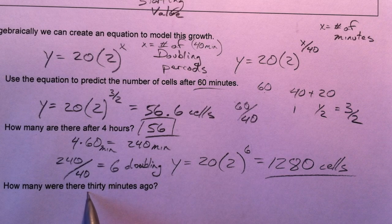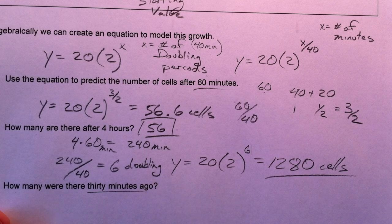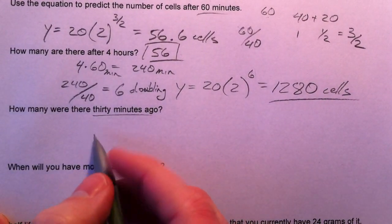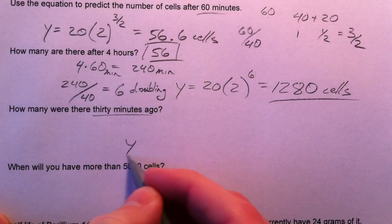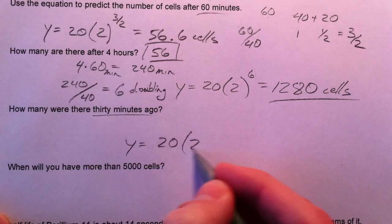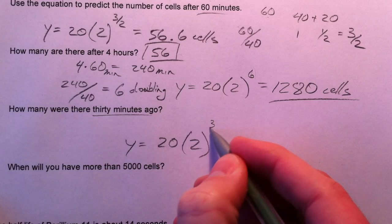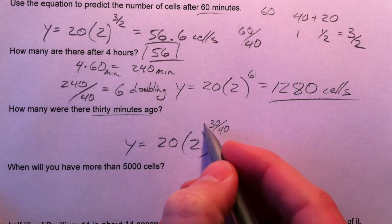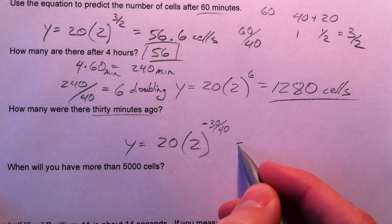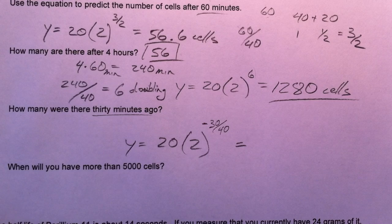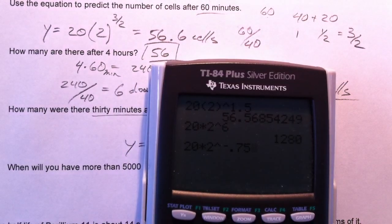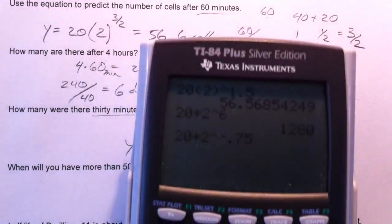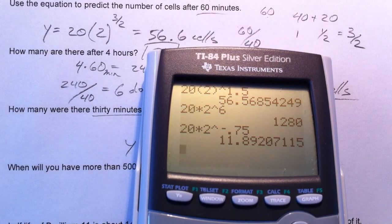We started with 20 — how many were there 30 minutes ago? That means negative time. 30 minutes out of 40 is 3/4 of a doubling period back in time. So y = 20 · 2^(−0.75), which gives 11.9.